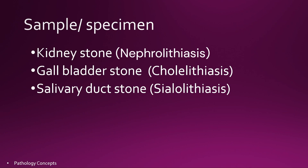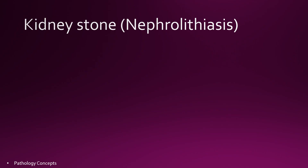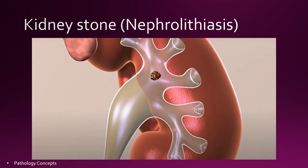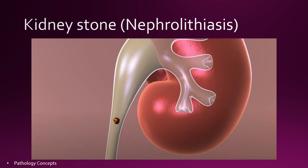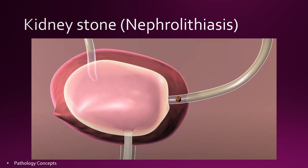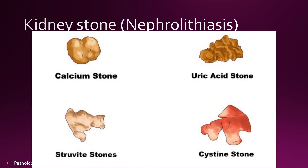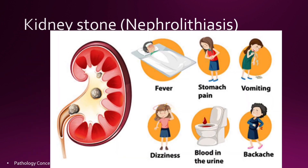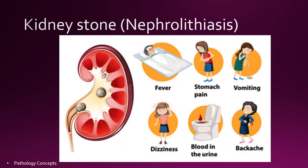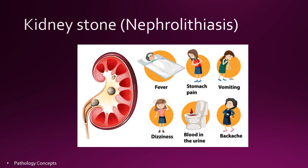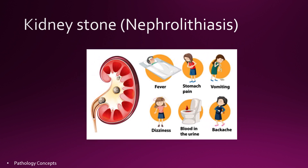gallbladder stone, and salivary duct stone. Kidney stone, also called nephrolithiasis, is a common illness with multifactorial etiopathogenesis. A kidney stone is a hard object made from chemicals in the urine. There are mainly four types of kidney stones: calcium oxalate, uric acid, struvite, and cystine.